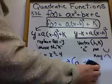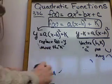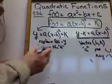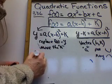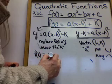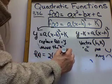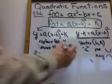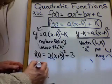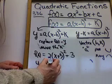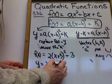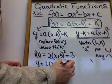Let me do one more example for you. Suppose you have this one: f of x equals 2 times x plus 5 squared plus 3. Replace it. So y equals 2 times x plus 5 squared plus 3.